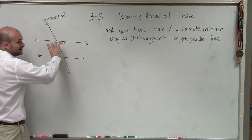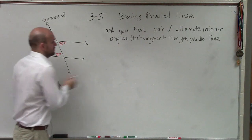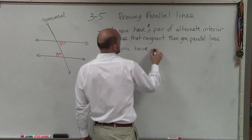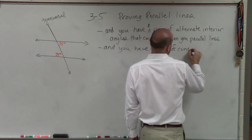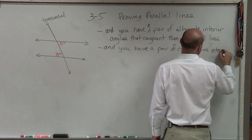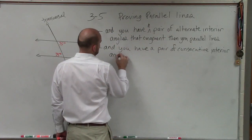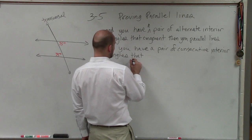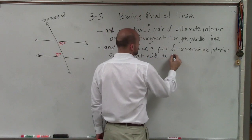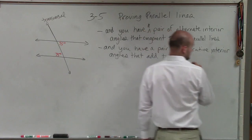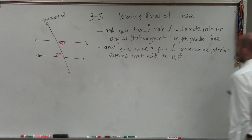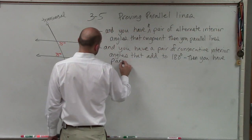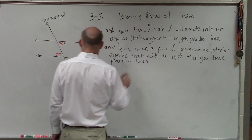Now let's go to the next one. If you have two lines cut by a transversal and you have a pair of consecutive interior angles that add to 180 degrees, then you have parallel lines.